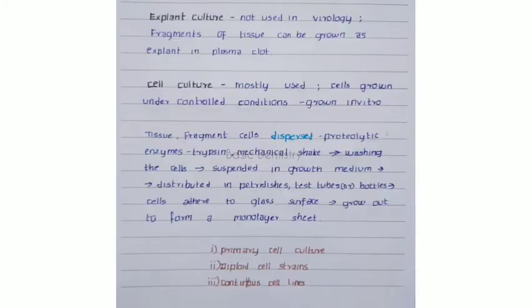The third type is the cell culture technique, which is the most widely used. Cells are grown under controlled conditions in vitro. Tissue fragments are first dispersed using proteolytic enzymes such as trypsin and a mechanical shaker. The cells are then washed and suspended in a growth medium, and distributed in petri dishes, test tubes, or bottles. These cells adhere to the glass surface and grow out to form a monolayer sheet.